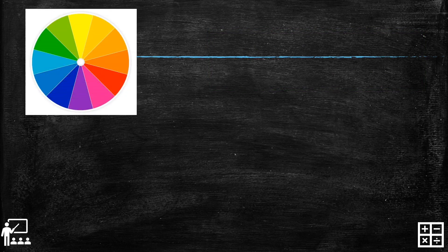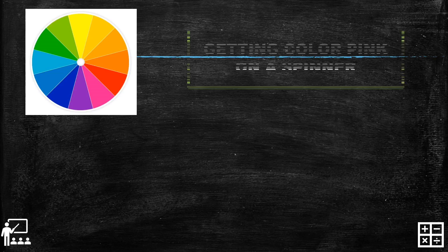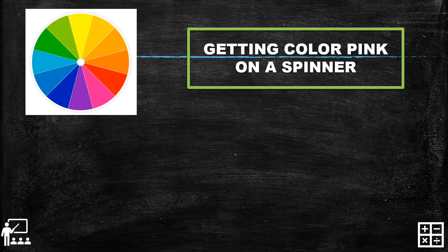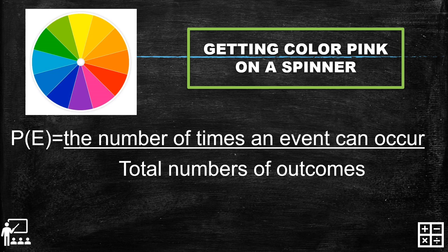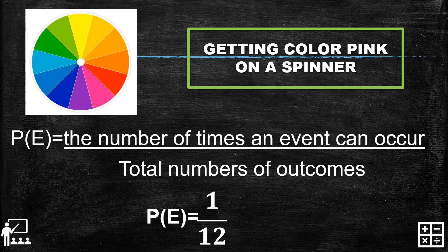Last is a color wheel. The event is getting the color pink on a spinner. How many pink sections are on the spinner? The number of times the event can occur is one. The total number of outcomes is twelve — there are twelve colors on the color wheel and only one pink. So the probability for this event is one over twelve.